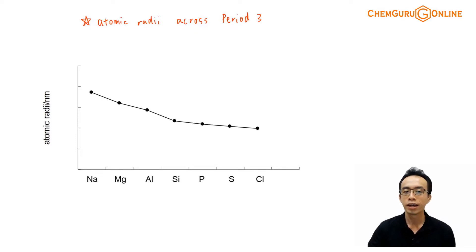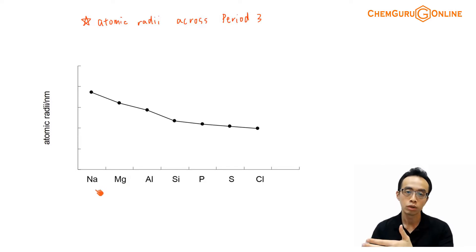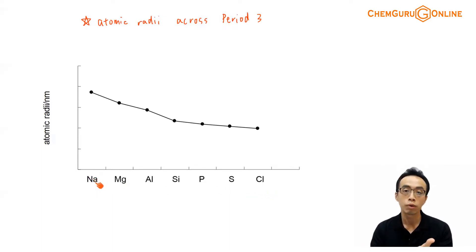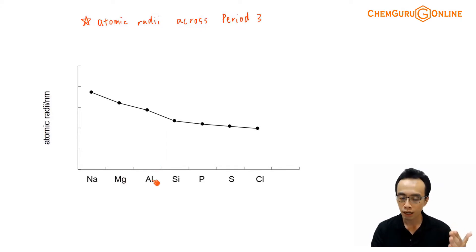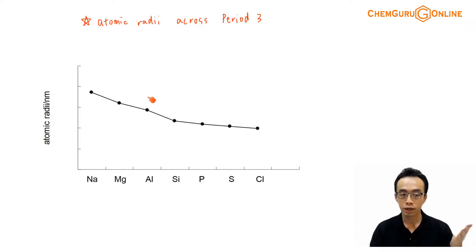Let's take a look at the atomic radius across period 3. We have our period 3 elements here, starting from group 1 — sodium — then magnesium, aluminum, silicon, phosphorus, sulfur, and chlorine, from group 1 to group 17. The atomic radii trend is shown here.